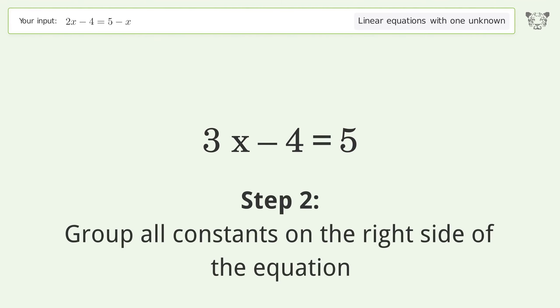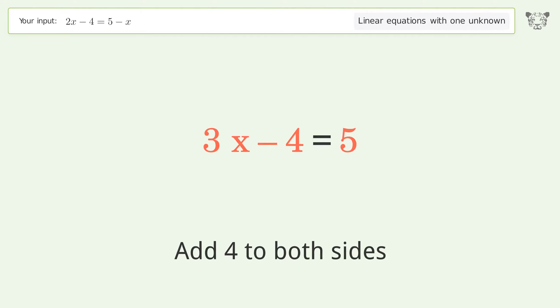Group all constants on the right side of the equation. Add 4 to both sides. Simplify the arithmetic.